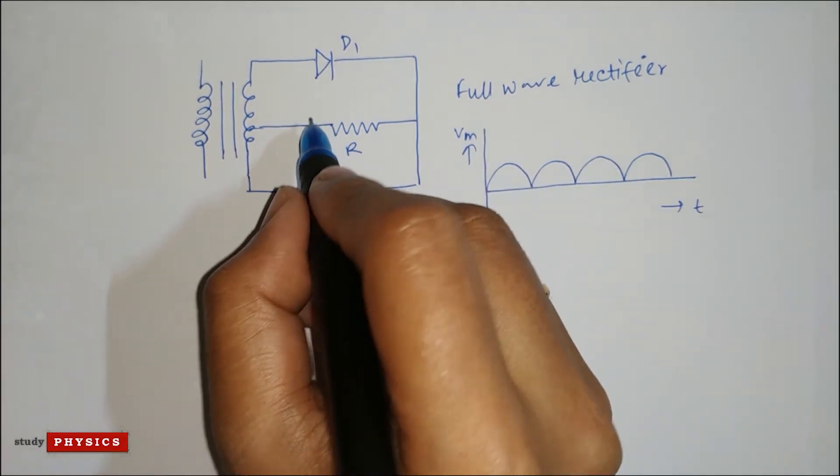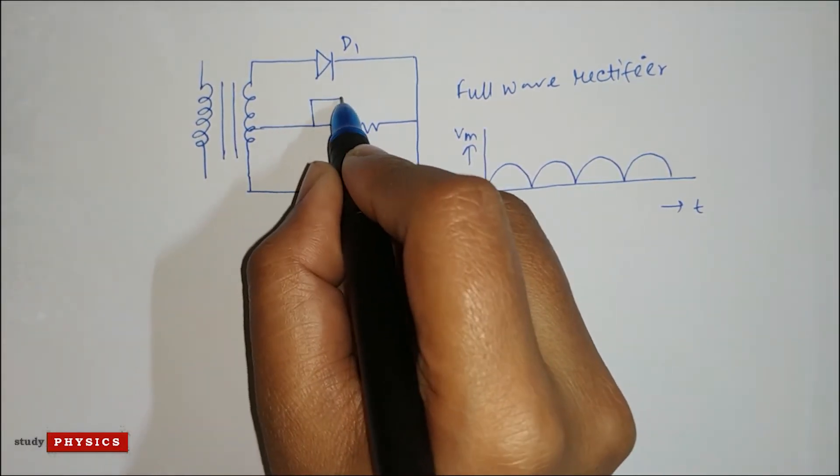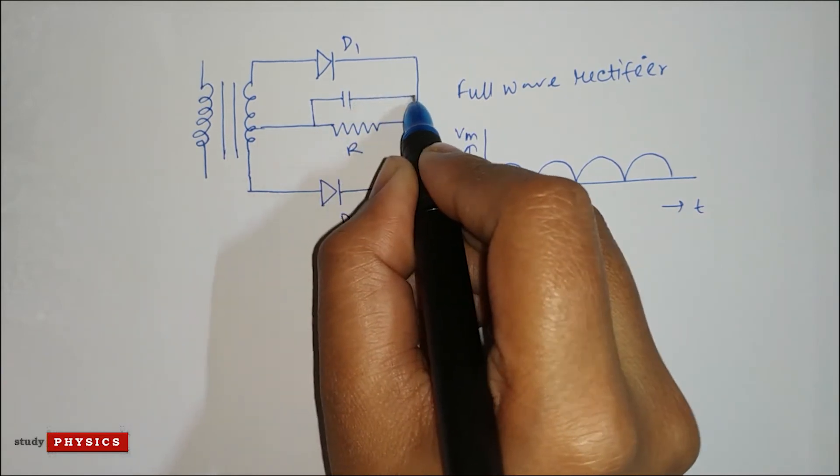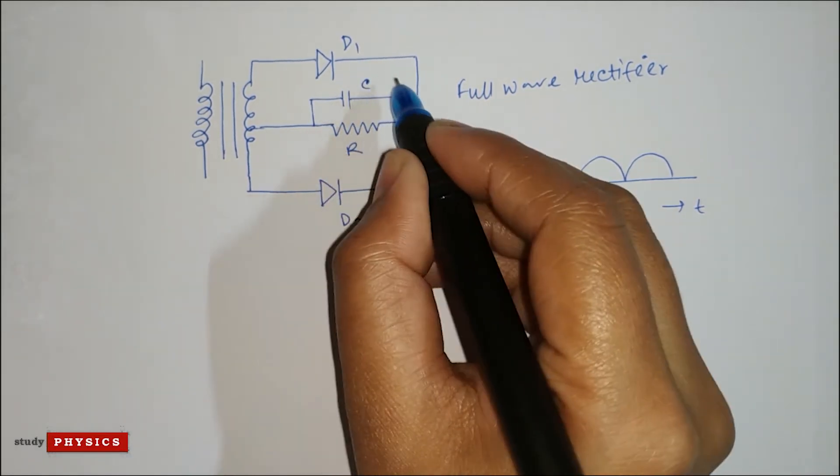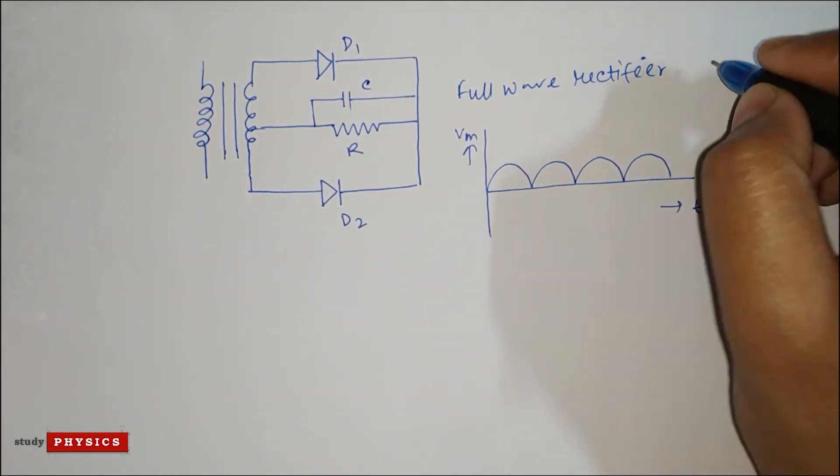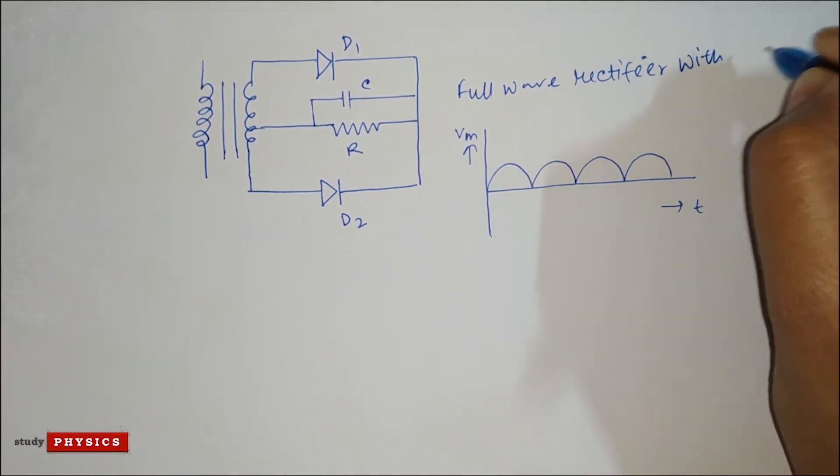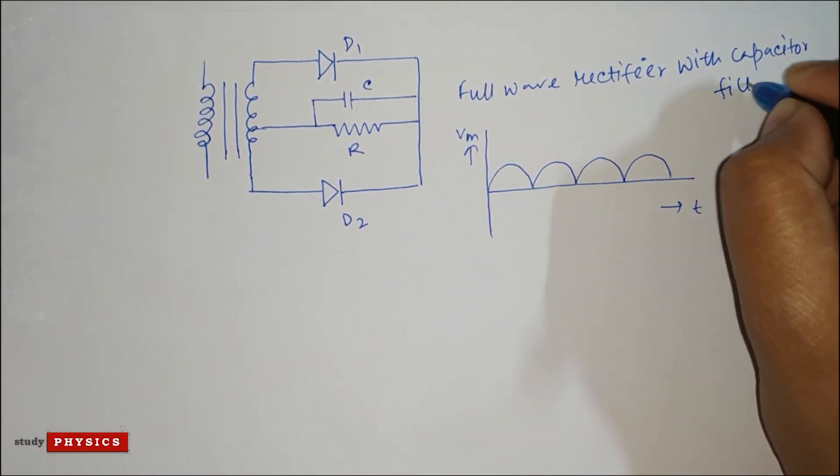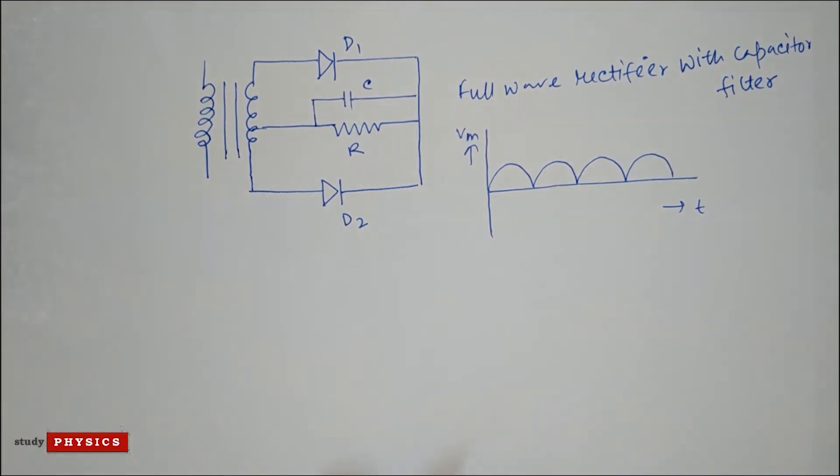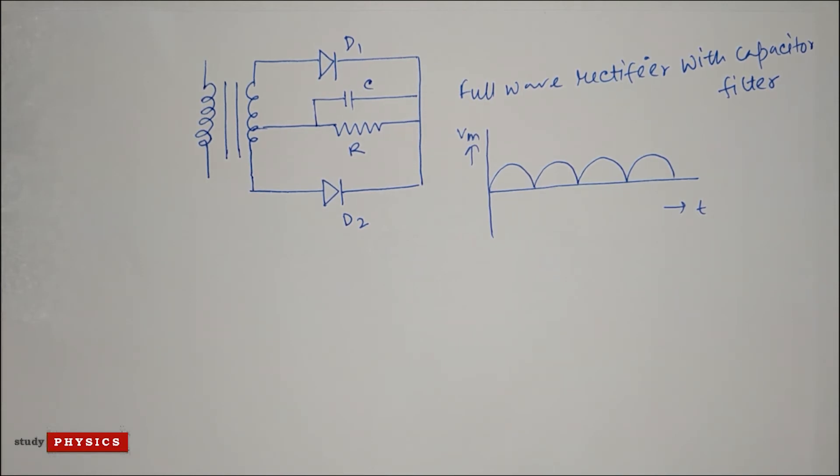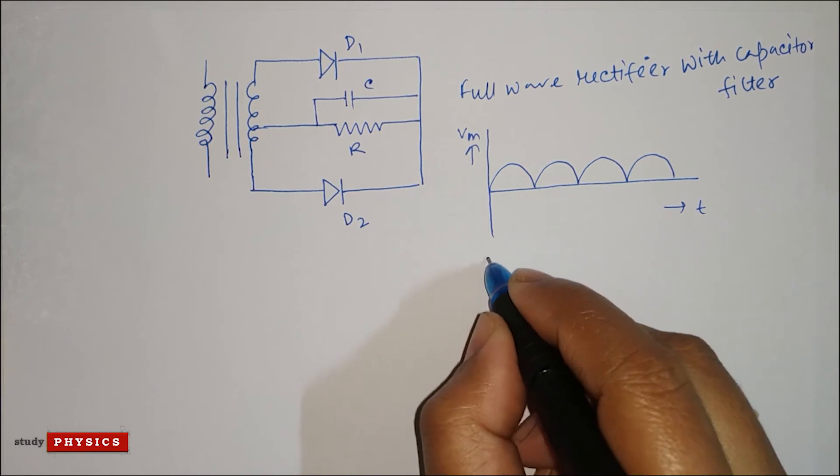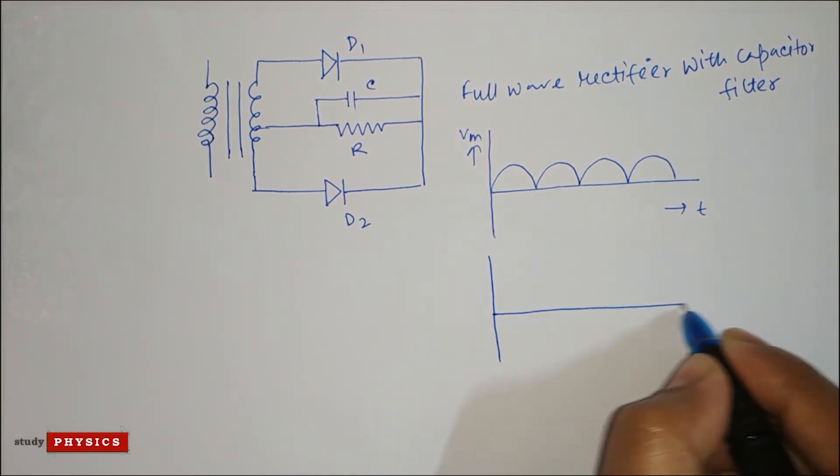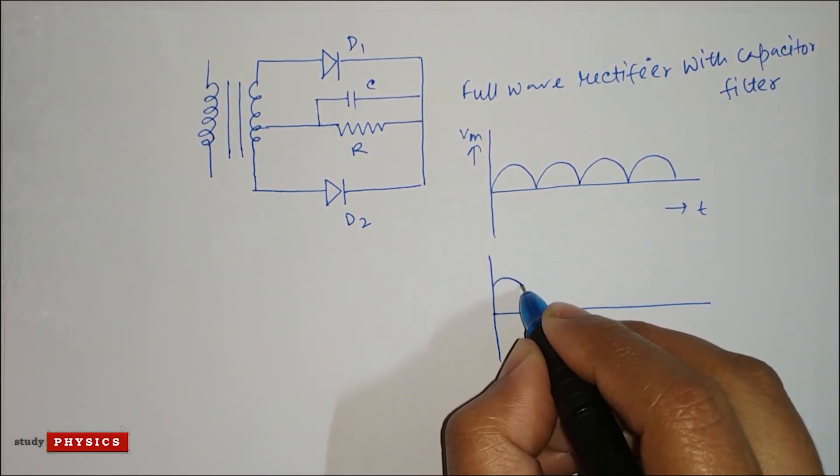If capacitor C is connected in series in the circuit, then this is called a full wave rectifier with capacitor filter. When the capacitor is added as a filter, the output shows that the slight ripple is missing in the output, and then the output will look like this.